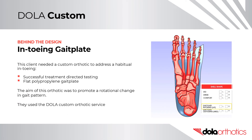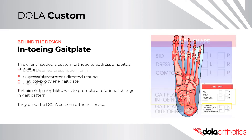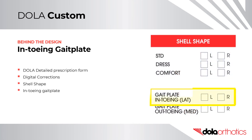Additional options include thin shell materials, cover lengths including to sulcus or to shell. Behind the Design: In-Toeing Gait Plate. This client needed a custom orthotic to address a habitual in-toeing pattern. They completed successful treatment-directed testing with a flat polypropylene gait plate. The aim of this orthotic was to promote a rotational change in gait pattern. They used the Dollar Custom Orthotic service, selecting the in-toeing gait plate from the shell shape options in the digital corrections section of the Dollar Detailed Prescription Form.